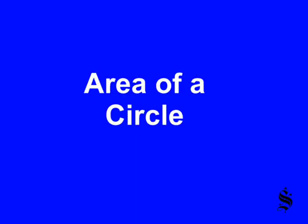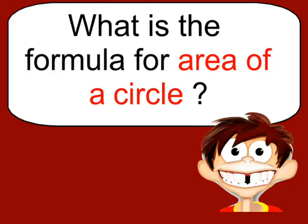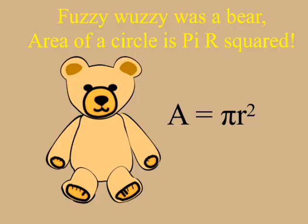Area of a circle. So what is the formula for finding the area of a circle? There's a little rhyme to help you remember the formula: Fuzzy wuzzy was a bear, area of a circle is pi r squared.